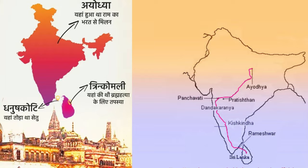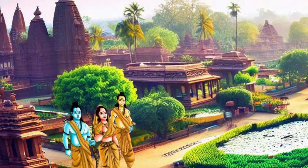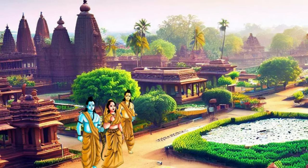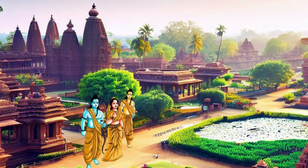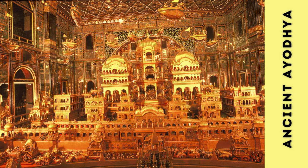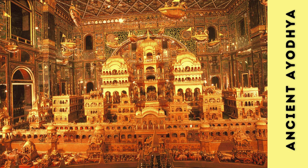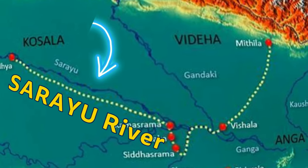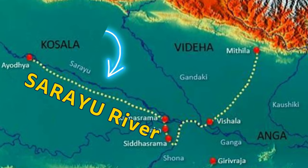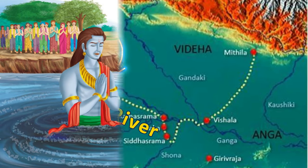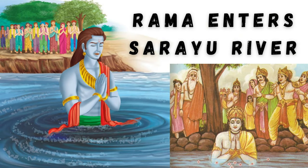River Sarayu: The Sarayu river is a tributary of the Ganga. Lord Rama, Sita, and Lakshmana initially resided in Ayodhya, a holy city on the banks of the Sarayu river. Sarayu Nadi is mentioned many times in the Ramayana. Rama departs from Ayodhya at the end of his earthly life by entering the Sarayu river and returns to his divine origin.